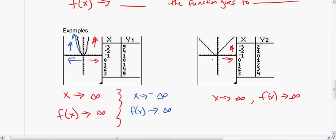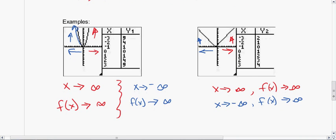And if I'm reading backwards, what's happening to my graph? It's also increasing. As x goes to negative infinity, my function continues to go to positive infinity. So there are two examples of end behavior.